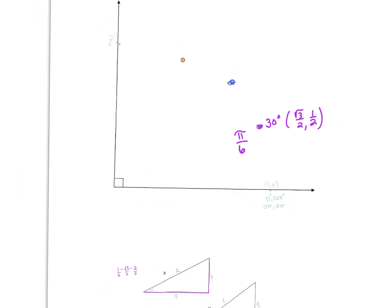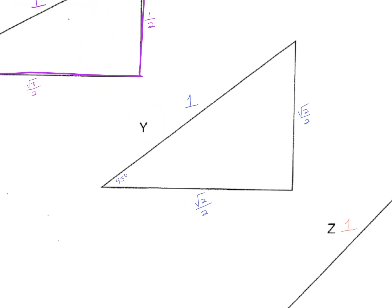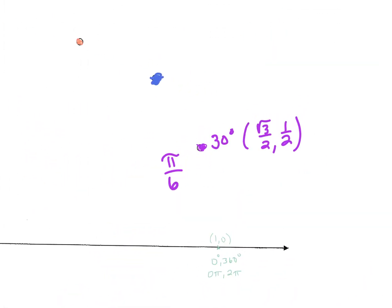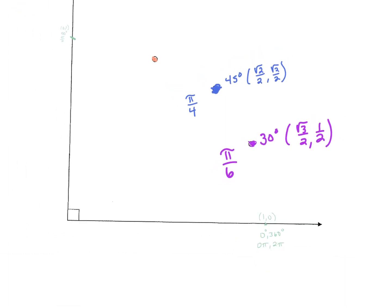Our second triangle was the 45-45-90, with sides 1, 1, √2. We divide all sides by √2 to get a radius of one, giving us the two sides as √2/2 each. So at 45 degrees the coordinate is (√2/2, √2/2). And 180 divided by 4 gives us 45, so pi over 4 is our 45-degree radian measure.